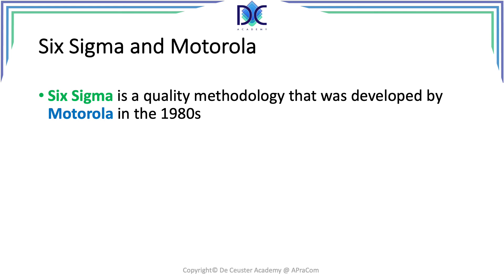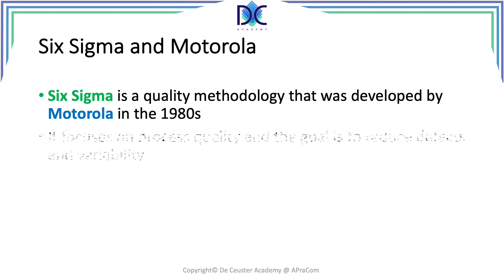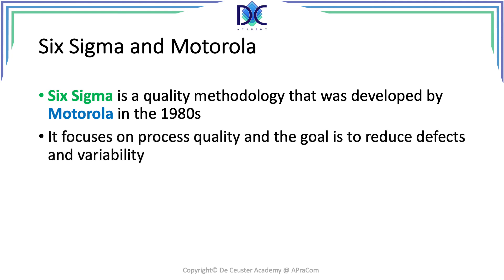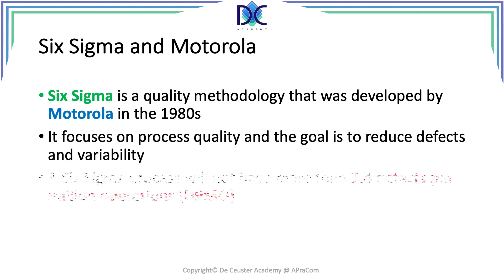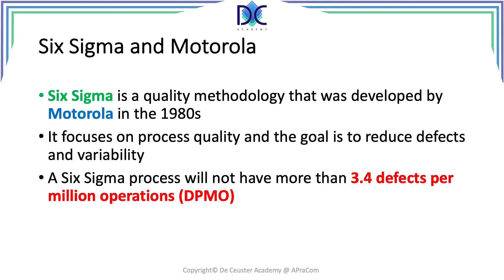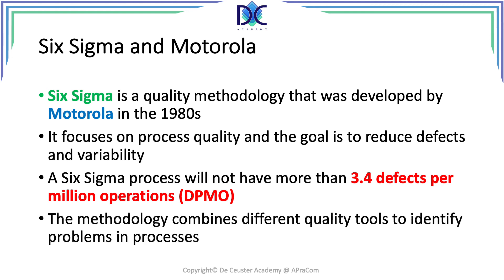Another very important element in quality is Six Sigma. Six Sigma is a quality methodology developed by Motorola in the 1980s, focused on process quality to reduce defects and variability. In the Six Sigma process, there should be no more than 3.4 defects per million operations. The methodology combines different quality tools to identify problems in processes. It's not fully covered in this course, but when we get to the CAPM and the third and fourth parts of the course, we will revisit quality issues. That concludes quality — let's continue in the next video. Thank you and bye bye.